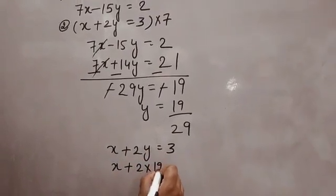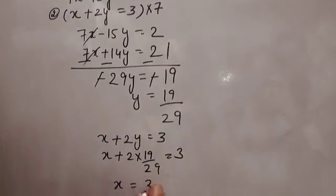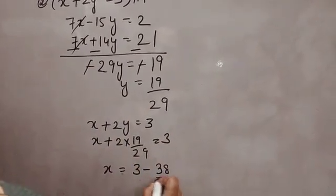x plus 2 into 19 over 29 is equal to 3. So x will come 3 minus, this will go that side, 38 over 29.